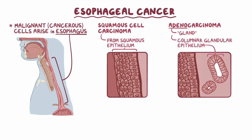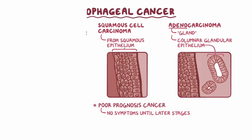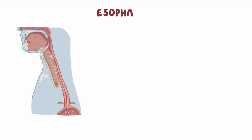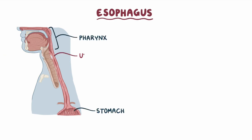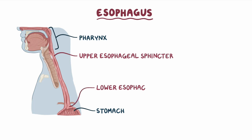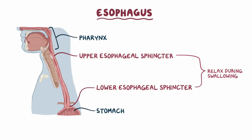Esophageal cancer is generally considered a poor prognosis cancer, because it doesn't cause symptoms until later stages. The esophagus is a long tube going from the pharynx to the stomach, connected to the pharynx through the upper esophageal sphincter and to the stomach through the lower esophageal sphincter. Both relax during swallowing to allow the passage of foods or liquids, and the lower esophageal sphincter is tightly closed between meals to prevent acid reflux.